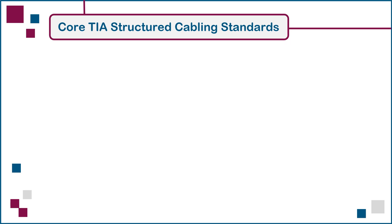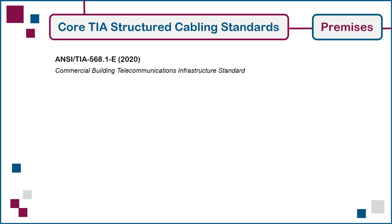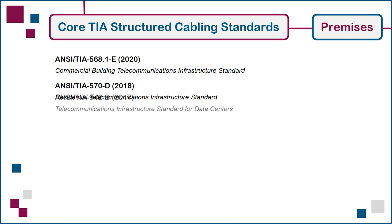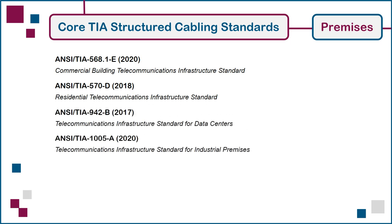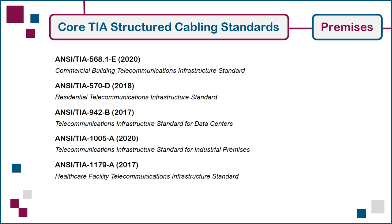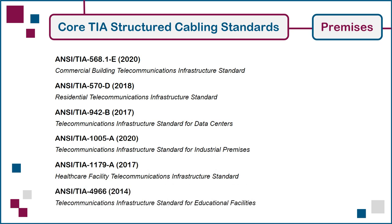Next, we have the Premises Set of Core TIA Structured Cabling Standards, each of which provides guidelines applicable to a specific type of building. The Premises Set consists of six publications to date, covering telecommunications infrastructure for commercial buildings, single and multi-dwelling residences, data centres, industrial premises such as manufacturing facilities and warehouses, healthcare facilities such as hospitals and clinics, and educational institutions of all levels.